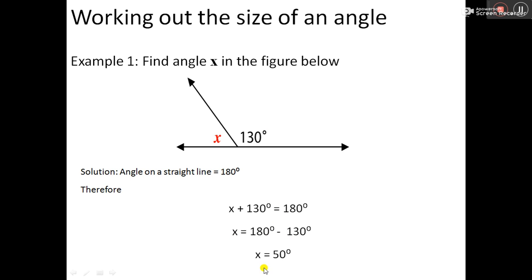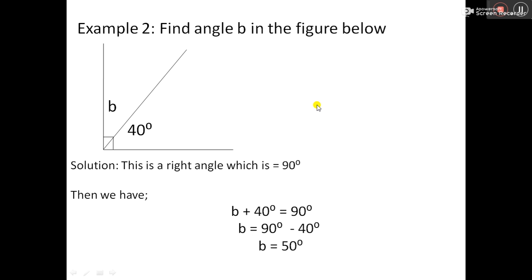Let's check out another example here. We have this—remember, this is a perpendicular line, right? And it forms a right angle, and the right angle sums up to 90 degrees. So for us to get this missing angle, which is signified by b here, it's just for us to subtract 40 from 90.